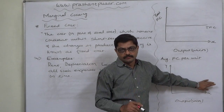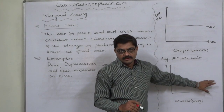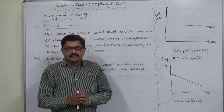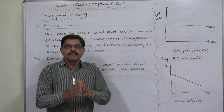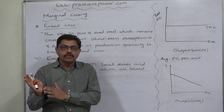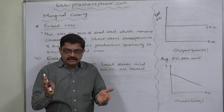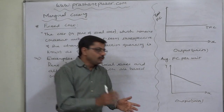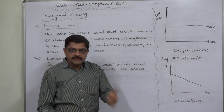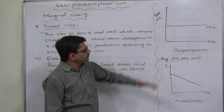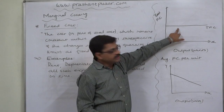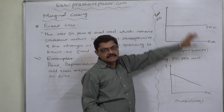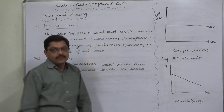Variable cost is that part of total cost which varies according to variation in production quantity in the same direction. On the other hand, the remaining part of total cost which remains constant irrespective of increase or decrease in production quantity is known as fixed cost. Thank you very much.